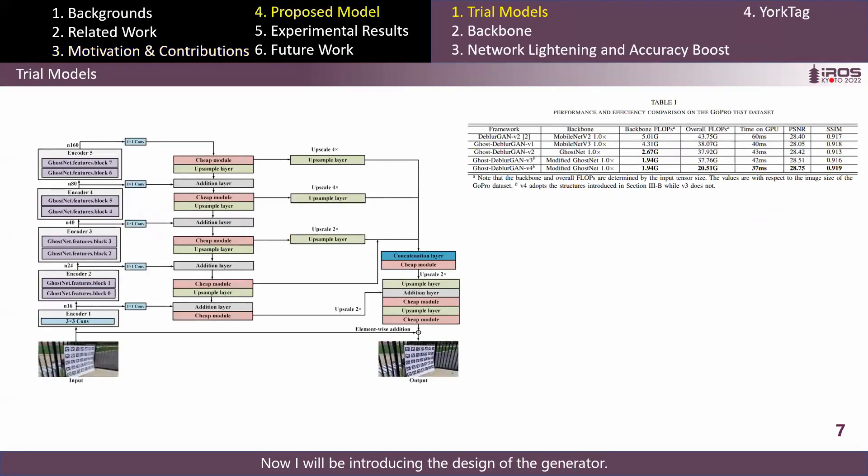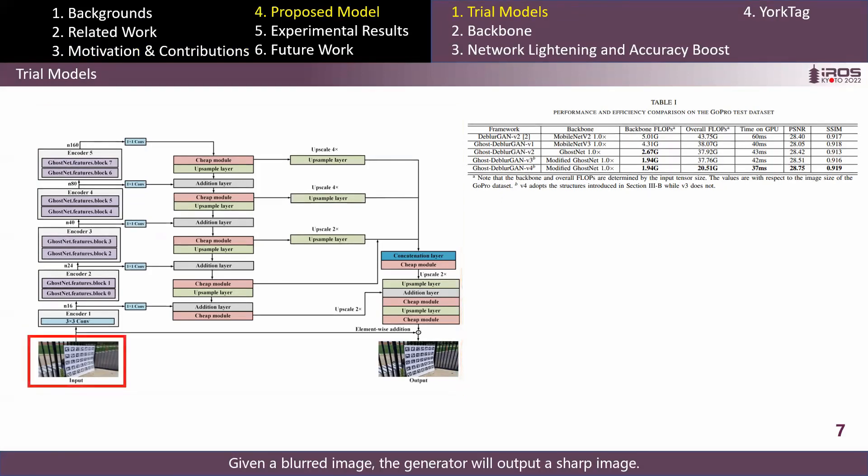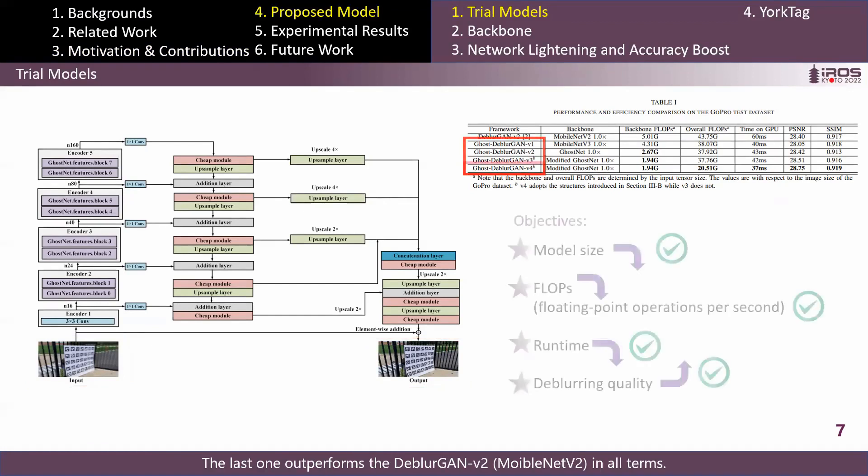Now we introduce the design of the generator. We adopted the discriminator in DeblurGAN V2, so our main contribution is located in developing a new generator. Given a blurred image, the generator will output a sharp image. And we have four trial models in total, and the last one outperforms DeblurGAN V2 and MobileNet V2 in all terms.